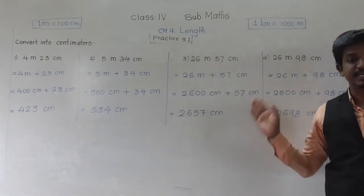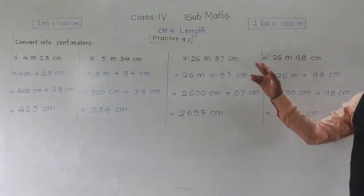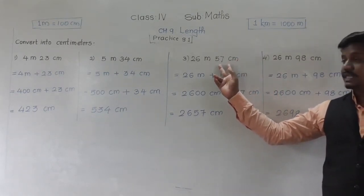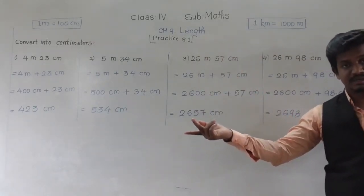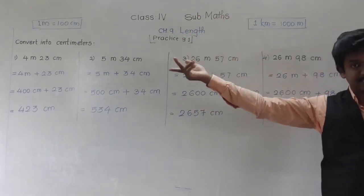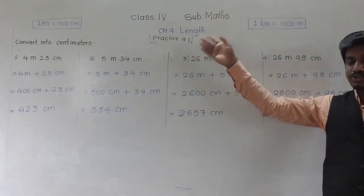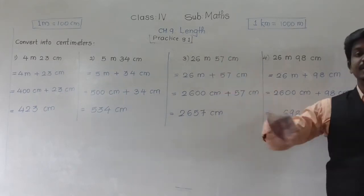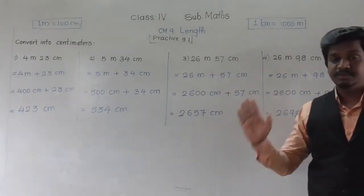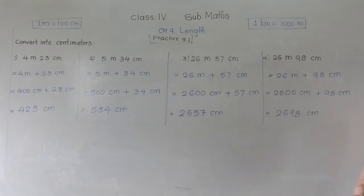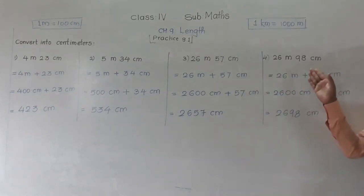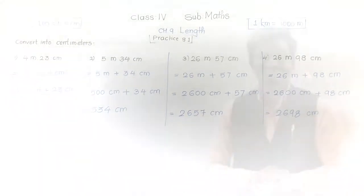So in this way we can convert lengths given in meters and centimeters into centimeters. What we do: keep the centimeter part as it is, and only convert the meter part. We know that 1 meter equals 100 centimeters, so whatever meters are given, just put two zeros after that number and it becomes centimeters. The remaining two examples in this question — solve them by yourself. Pause this video, write the four examples in your notebook, then let's solve the next question in practice 9.1.